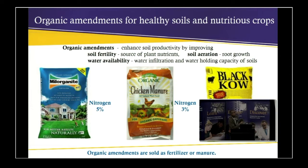In this experiment, we used Milorganite, which is prepared from municipal waste, chicken manure, and cow manure. As mentioned earlier by Dr. Fares, the nitrogen content of Milorganite is 5%, chicken manure is 3%, and the nitrogen content of cow manure is 0.5%.